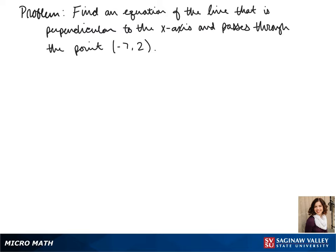Welcome to another day of algebra. Today we'll be finding an equation of the line that is perpendicular to the x-axis and passes through the point negative 7, 2.